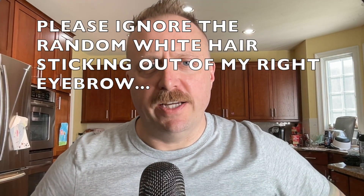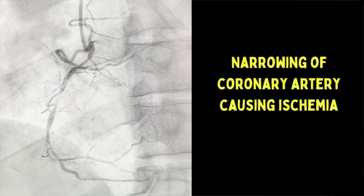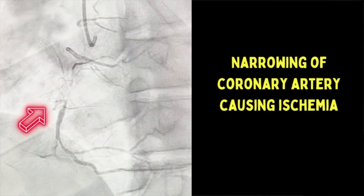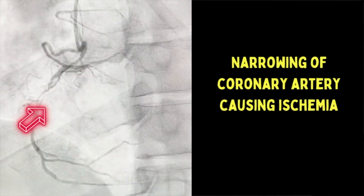By now we have the STEMI identification thing down pat. Often overlooked are ischemic changes that indicate an acute coronary syndrome. Acute coronary syndrome is where blood flow through the coronaries is reduced, and the part of the heart fed by that part of the coronaries becomes ischemic and either dies or doesn't function appropriately.